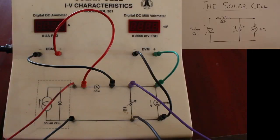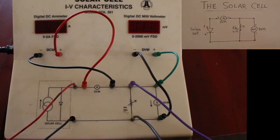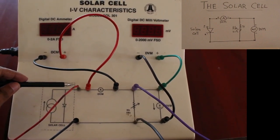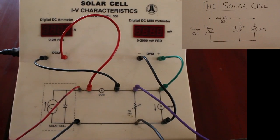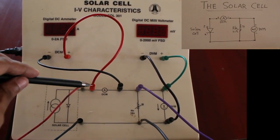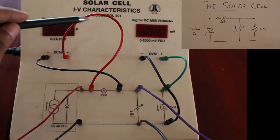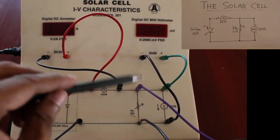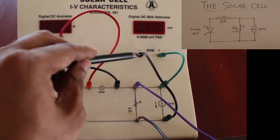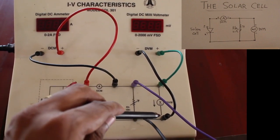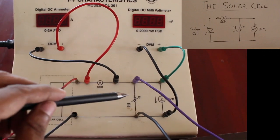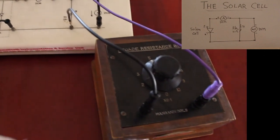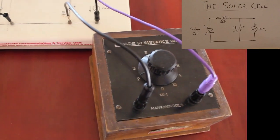The connections are made as shown in the figure to the right. The red wire is the positive terminal of the solar cell and the black wire is the negative terminal. The positive of the DC ammeter is connected to positive and negative to negative. The negative of the voltmeter is connected to the respective position on the circuit and positive to the positive side. Two wires are connected to the rheostat or variable resistor.